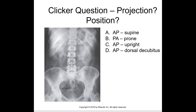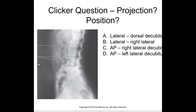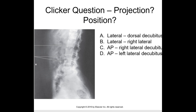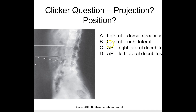What position is this? This is the AP supine position. The answer here is B — the lateral, right lateral. The right side will be against the IR with the right marker. And that concludes the special views of the abdomen. Thank you.